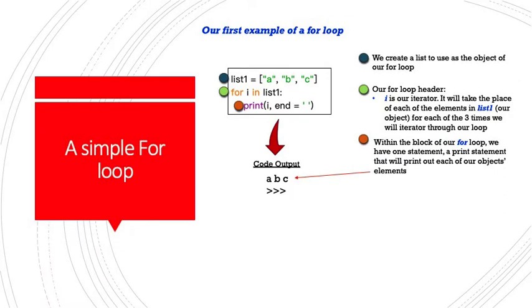Here we have our first example of a for loop. We create a list to use as the object of our for loop. Our for loop header, for I in list one. List one being our list. And in this case, it's the object. It's the thing that we will iterate upon. I is our iterator. It will take the place of each of the elements in list one, our object, for each of the three times we will iterate through our loop. Why three times? Because there are three elements in list one, our object.